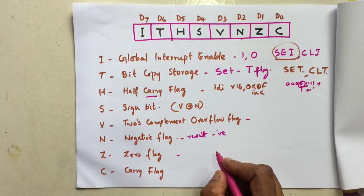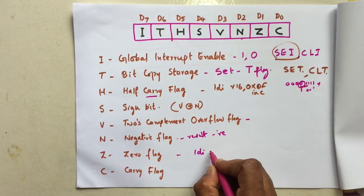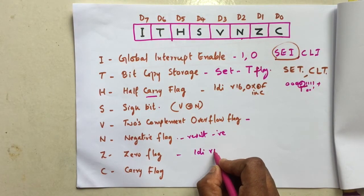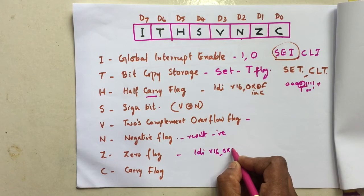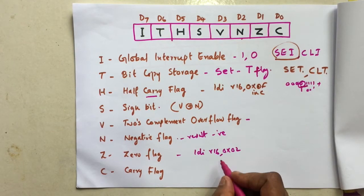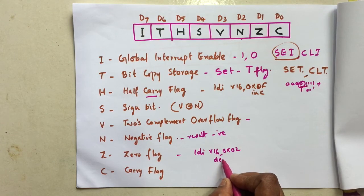For example, LDI R16, 0x02. So R16 is 0x02. Then decrease by 0x01.